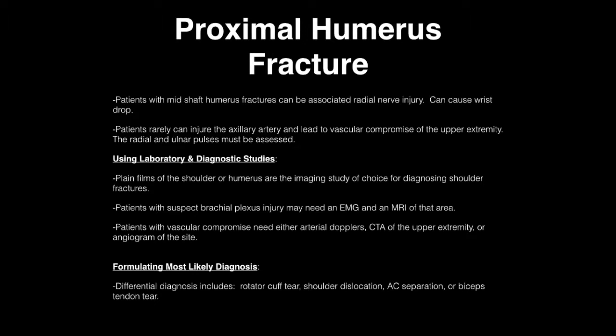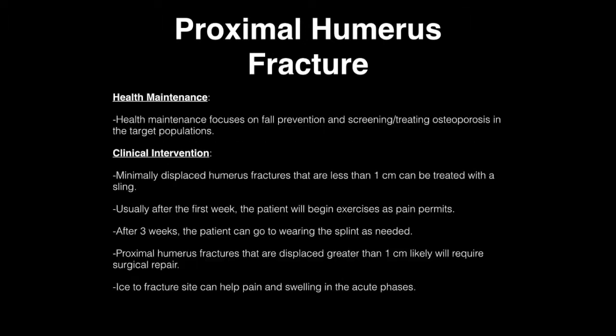Plain films of the shoulder and humerus are the imaging study of choice for diagnosing shoulder fractures. Patients with suspected brachial plexus injury need an EMG and an MRI of the shoulder. Patients with vascular compromise may need arterial dopplers, a CT of the extremity, or an angiogram. Differential diagnosis includes rotator cuff tear, shoulder dislocation, AC separation, or biceps tendon tear. Health maintenance focuses on fall prevention and screening for osteoporosis in target populations.